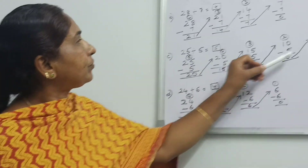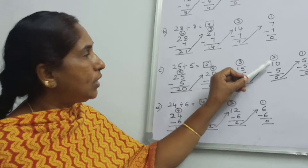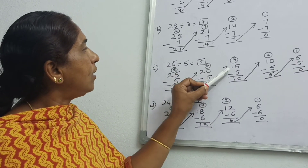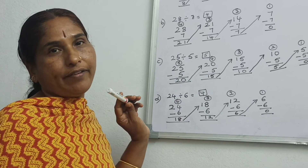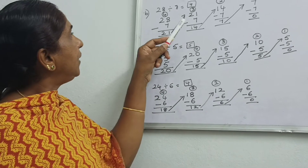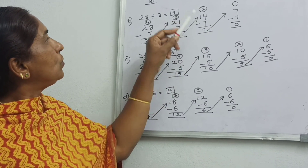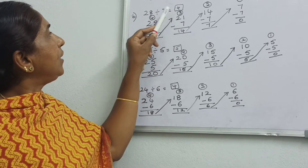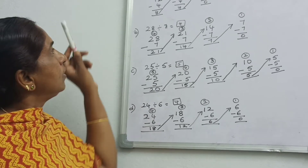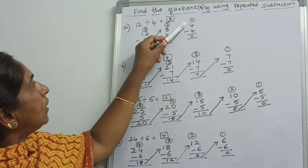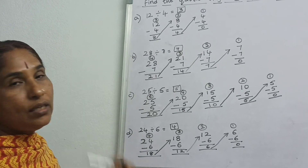Here also you can see: 5 ones are 5, 5 twos are 10, 5 threes are 15, 5 fours are 20, 5 fives are 25. And again here: 7 ones are 7, 7 twos are 14, 7 threes are 21, 7 fours are 28. Here: 4 ones are 4, 4 twos are 8, 4 threes are 12.